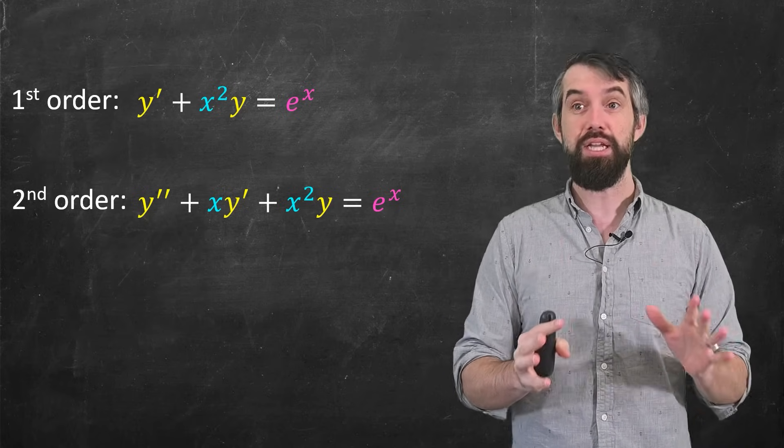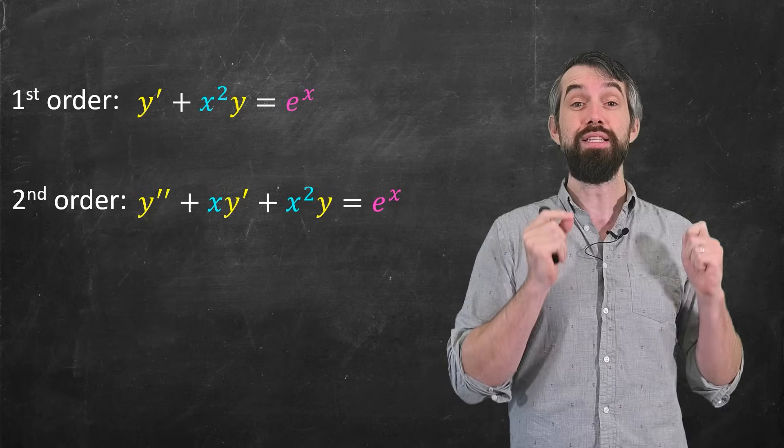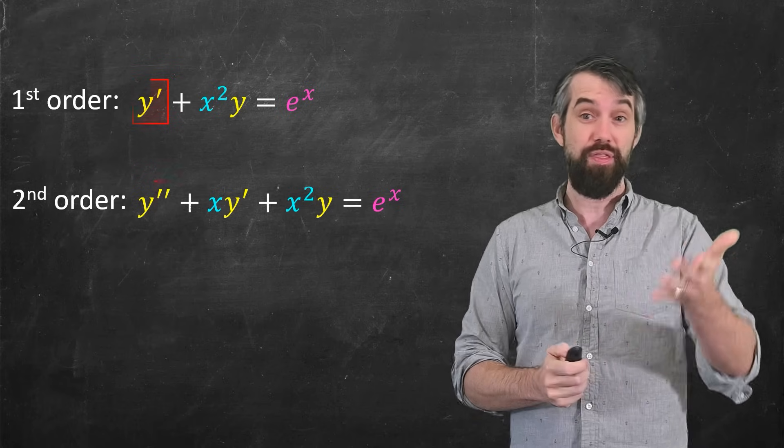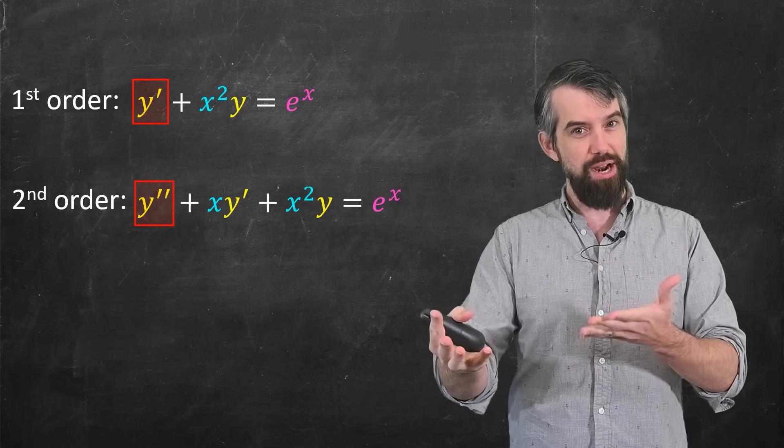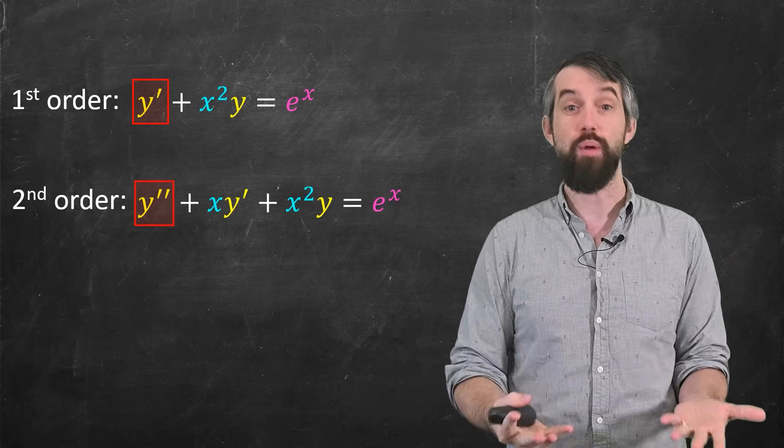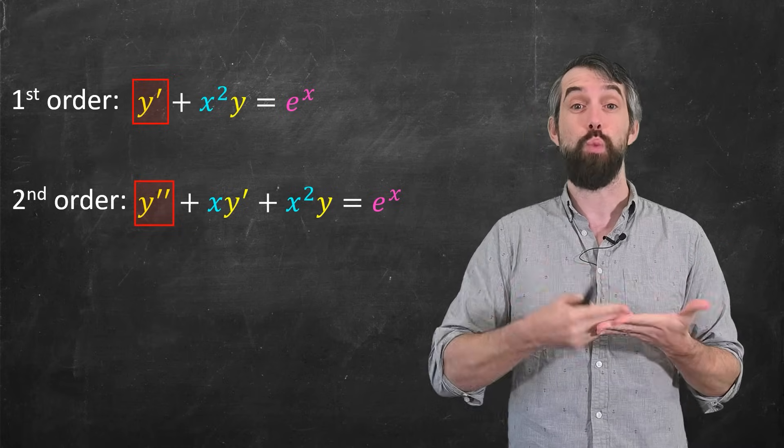One of the first things I do when I see an equation is try to decide what is the order, which means the highest derivative that appears. So the top one is first order because its highest derivative is y prime and the bottom one is second order, its highest derivative is y double prime.